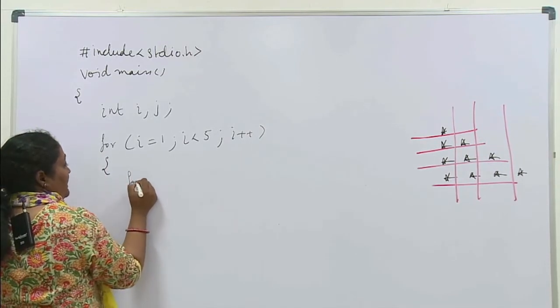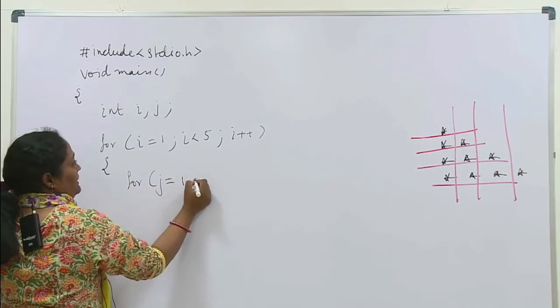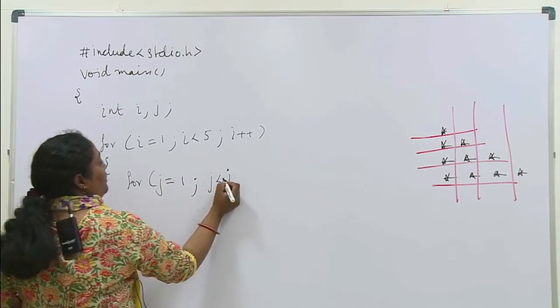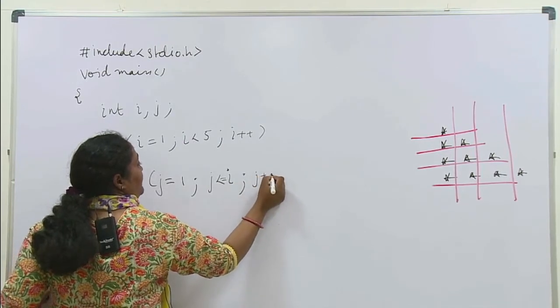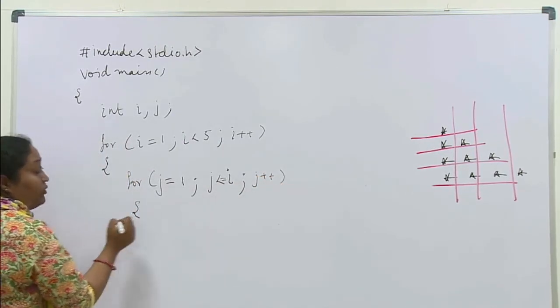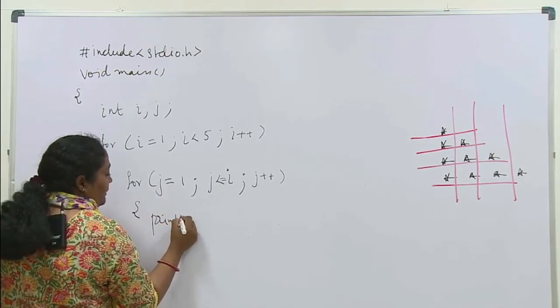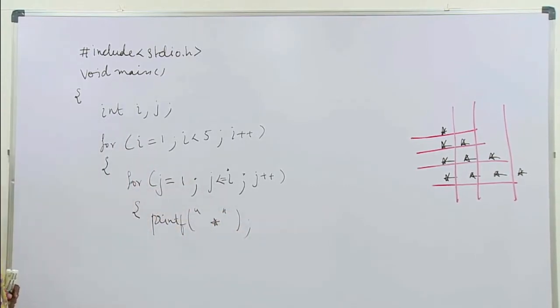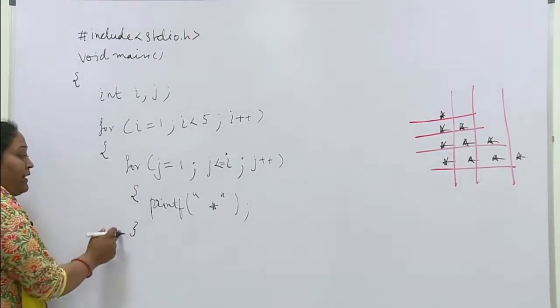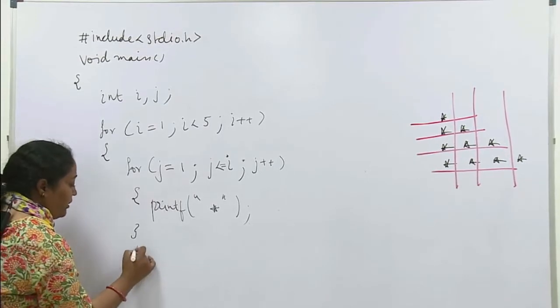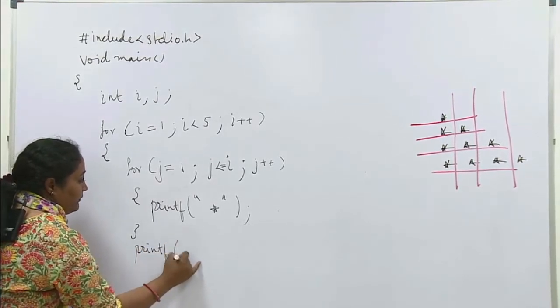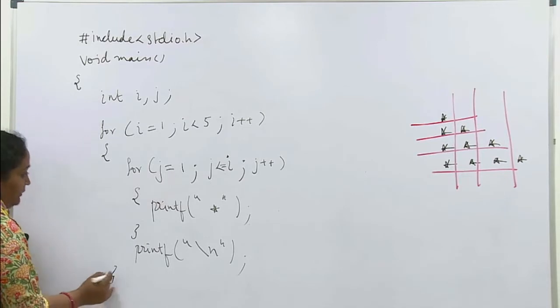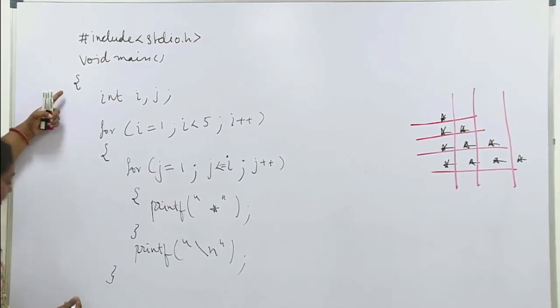Is for loop ke andar mein maine ek aur for loop lagaya. For j equals 1, aur condition kya hai? j less than equals to i, j++. Ye for loop shuru hua, aur is mein maine likha printf star. Star print karna hai. Phir dekho, ye for loop andar wala hai, isko maine khatam kiya. Khatam karne ke baad maine ek aur printf likha, aur is mein maine kya dala? Backslash n, yaani new line. Ye dusra wala for loop khatam hua, aur ye mera khatam ho gaya main.